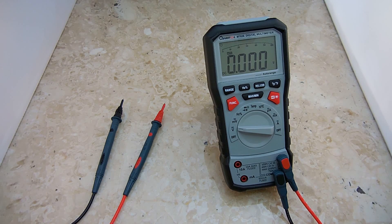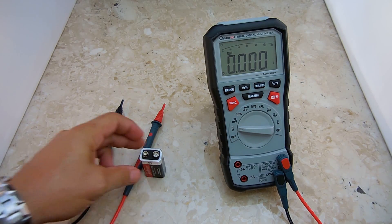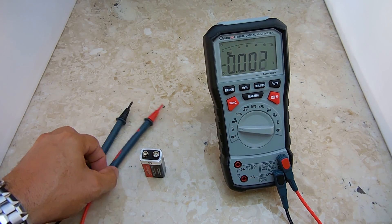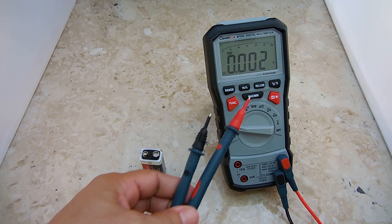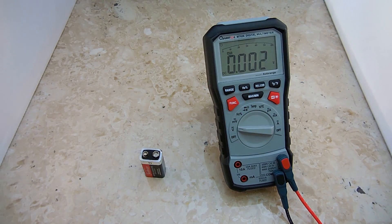The way it works, the digital meter is going to display a value which is equal to the actual value minus the set reference value. In order to set the reference value, we can take a battery like this. We're going to measure the voltage and then we're going to push the REL button once and let go.